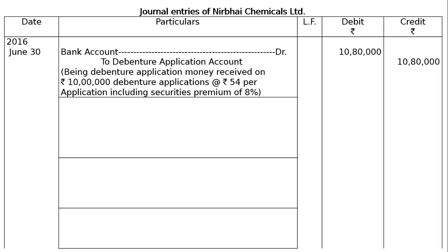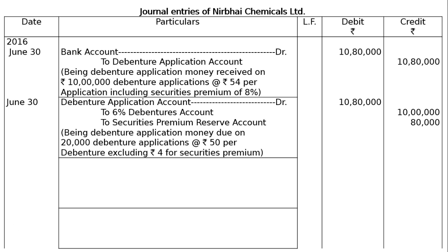Next is the due entry along with premium, also on June 30th. Debenture Application Account debited Rs. 10,80,000 — to 6% Debentures Account Rs. 10,00,000 and to Securities Premium Reserve Account Rs. 80,000. Being debenture application money due on 20,000 debenture applications at the rate of Rs. 50 per debenture, excluding Rs. 4 for securities premium which has been shown separately.